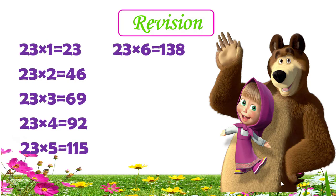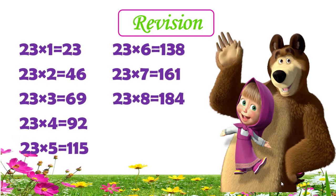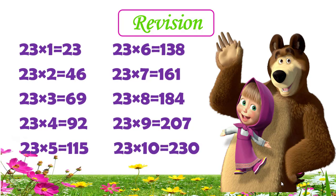23 sevens are 161, 23 eights are 184, 23 nines are 207, 23 tens are 230.